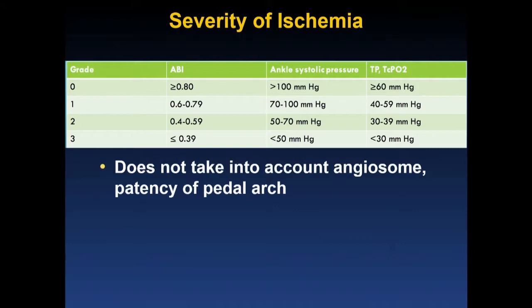With regards to severity of ischemia, this is also graded 0 to 3, using ABI values, ankle systolic pressures, toe pressure, and TcPO2 values as a guide. It's unclear which of these should be used when values are discordant. Importantly, this does not account for other factors contributing to wound oxygenation, including the angiosome of the supplying artery and patency of the pedal arch, which are clearly important determinants of wound healing.